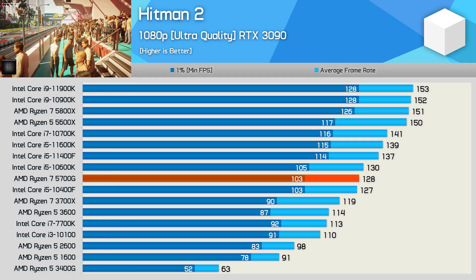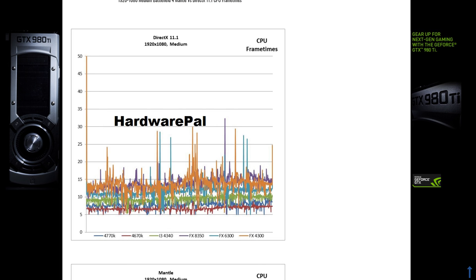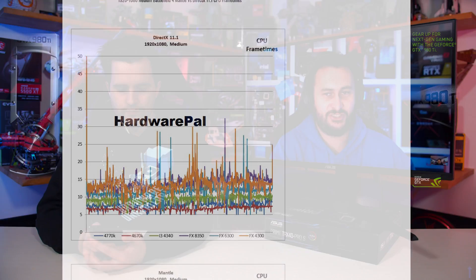As for frame time graphs, I am not a fan of them. For a science-type video, analyzing those for individual CPUs can maybe be interesting, but dubious in how valuable they are because they're just so difficult to read. Overlaying them with other CPUs just becomes a mess — you can't really tell what's what. It's visualized so much better in a bar graph showing 0.1% lows and 1% lows. I don't know what this insistence is on frame time graphs being a more technical, more thorough way of showing the data, because it just simply isn't.